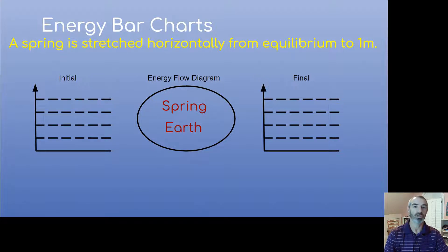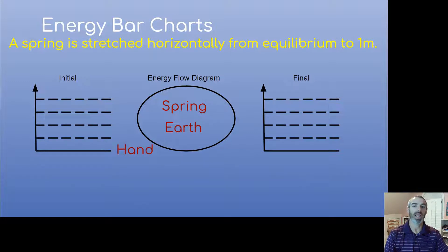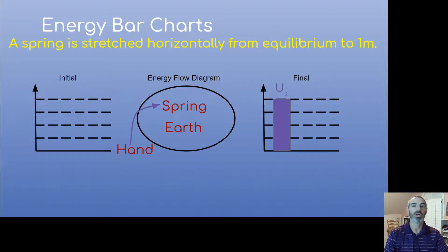So there's no energy in the initial situation, which means there has to be something outside the system providing energy to the spring — and that's my hand. My hand is pulling the spring, so my energy flow shows the hand giving the spring energy. Then I ask the same three questions again. Is there anything moving? No. Height greater than zero? No. Spring stretched or compressed? Yes — the spring is stretched one meter, so we have stored spring energy.